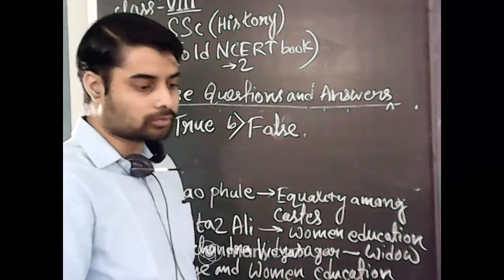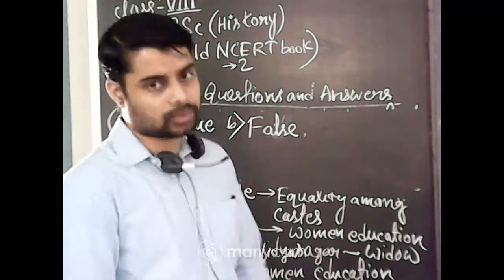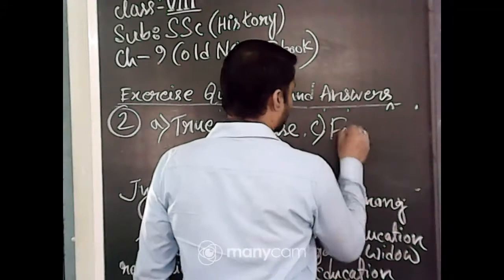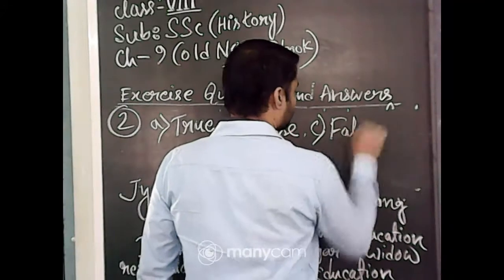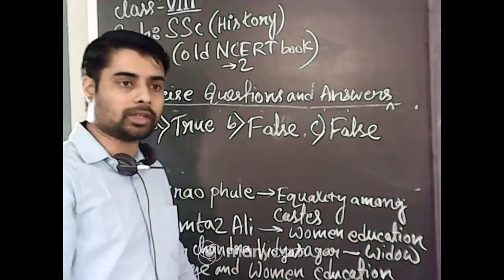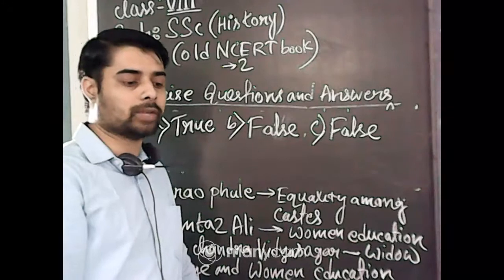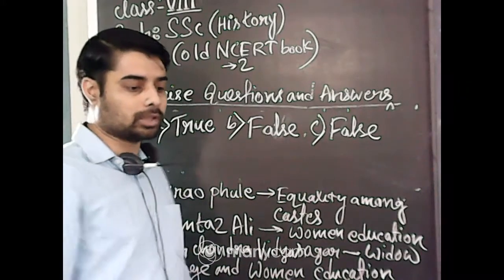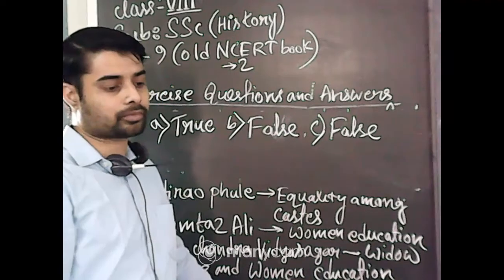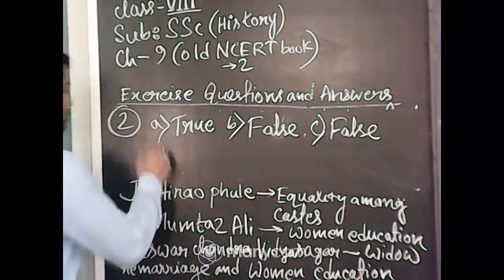Number C, that reformers got full support from all sections of the people of the country. This is also a false statement. Because at that time, the Indian society was so much conservative. Those who practiced something new and tried to reform the society, they were very much criticized. That's why the reformers did not get full support from all sections of the people of the society.